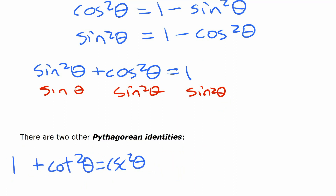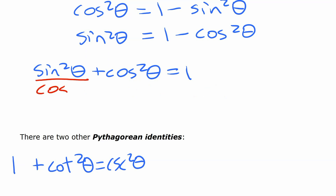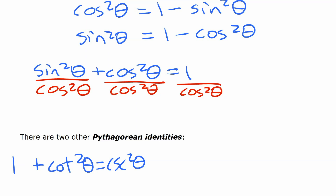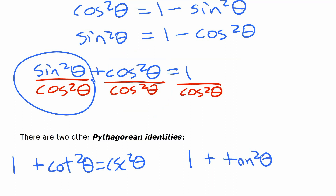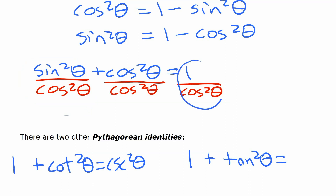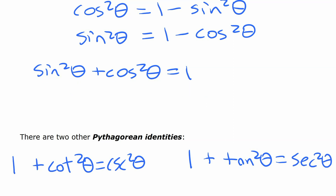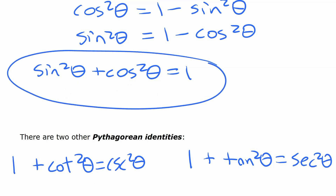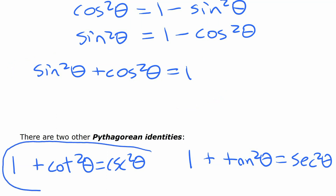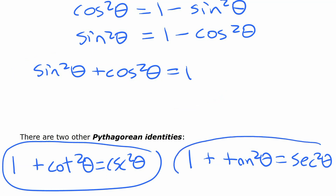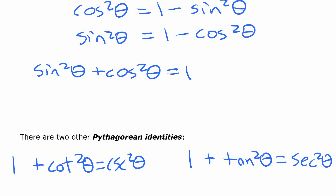We can do a similar thing by dividing both sides by cosine squared. Cos squared over cos squared is one. Sine squared over cos squared is tangent squared. So that side is one plus tan squared. And one over cosine squared is secant squared theta. So you actually have three different Pythagorean identities: sine squared plus cos squared equals one; one plus cotangent squared equals cosecant squared; and one plus tangent squared equals secant squared.